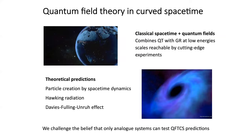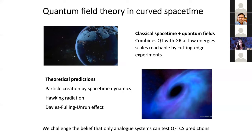Quantum field theory in curved spacetime is not the ultimate theory — it's a semi-classical theory in which we consider a classical spacetime background given by the Einstein equations and study how quantum fields behave under it. It's not quantum gravity, and it doesn't take into account how the quantum fields themselves affect or curve the spacetime. In this sense it's semi-classical, reminding me a lot of semi-classical quantum optics.